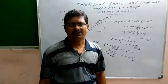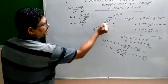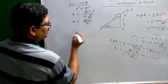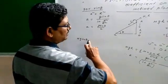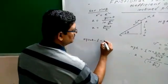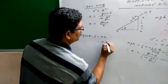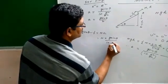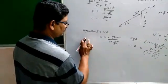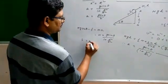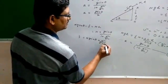Now let us calculate the frictional force for a body moving along a rough inclined plane. The force g sine theta acts along the inclined plane, and frictional force acts in the opposite direction. The equation of motion of the body is: mg sine theta minus f equals ma, where a equals g sine theta divided by (1 plus k squared by r squared). From this we can calculate the frictional force: f equals mg sine theta multiplied by k squared by (r squared plus k squared).